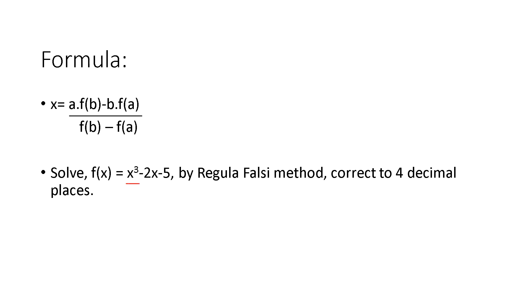Here is a question: Solve f(x) = x³ - 2x - 5 by the Regula Falsi method, correct to 4 decimal places. So x³ - 2x - 5 is our f(x).